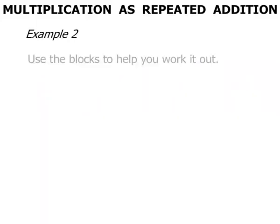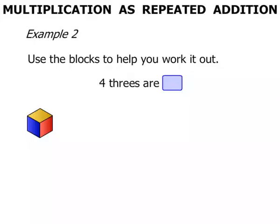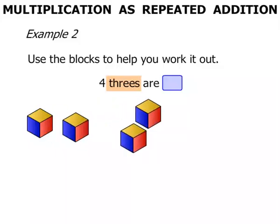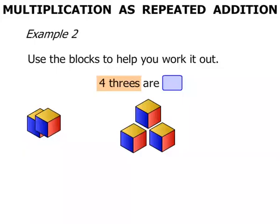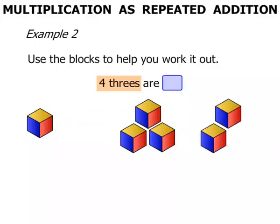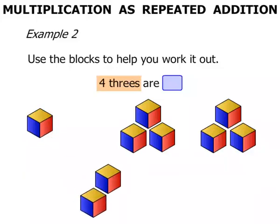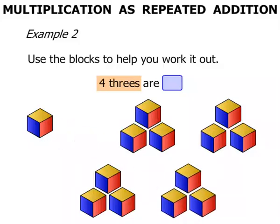Example 2 now. Use the blocks to help you work it out. We've got 4 3's to find. We're going to deal with 3's, so let's do groups of 3. 1, 2, 3 — there's our first group of 3. We want 4 3's, so let's start moving the blocks around. There's another group of 3 — we've got 2 3's now. Keep moving them around — we've got 3 3's now. And finally another group of 3. Yes, we've got 4 3's.